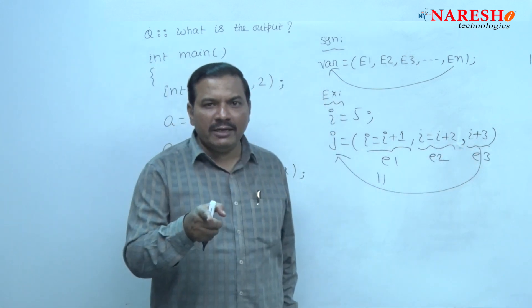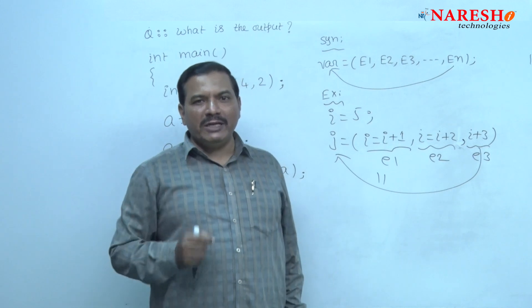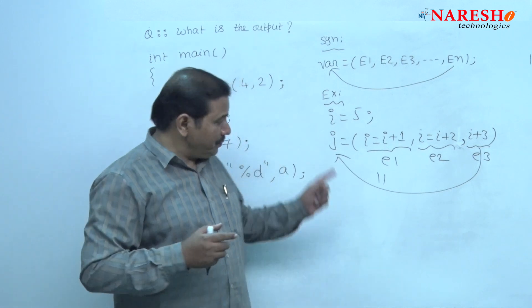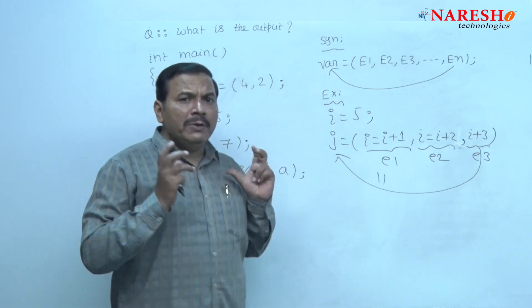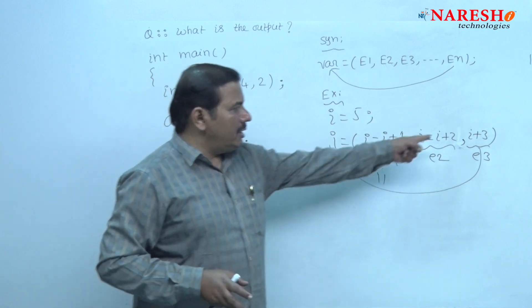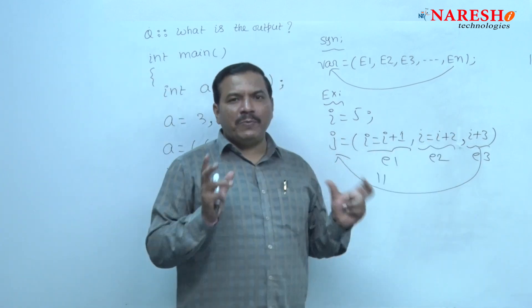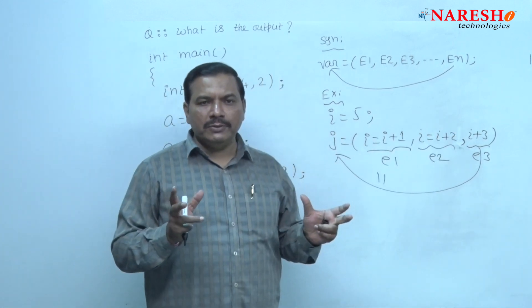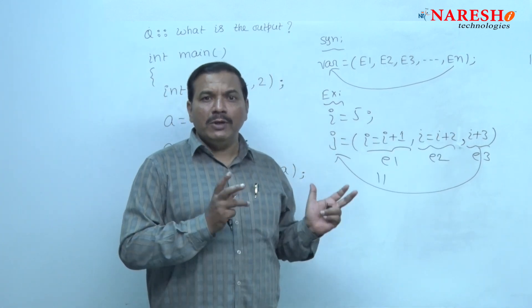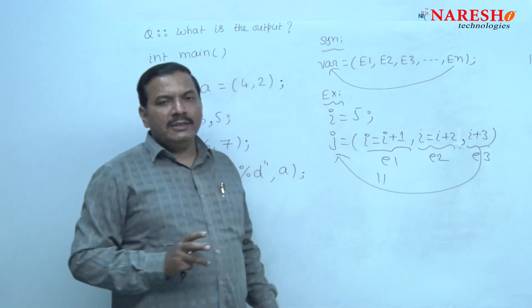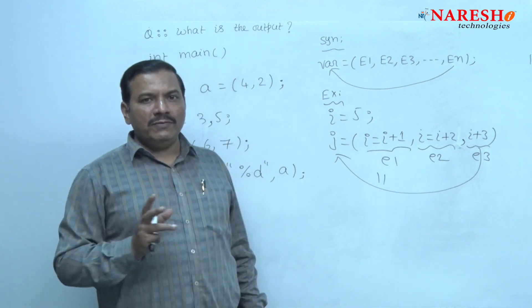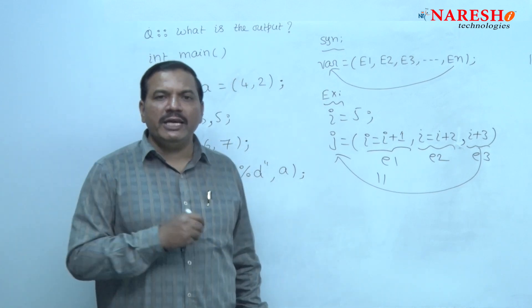If you print j, 11 is displayed on the screen. Finally, the variable j holds the rightmost expression value, that is i + 3, which is 11 — that is the final value of variable j.